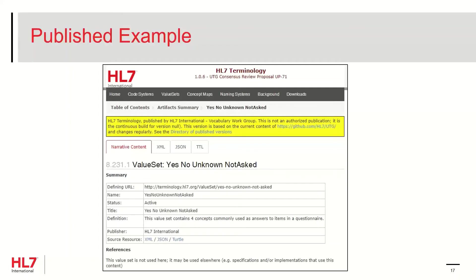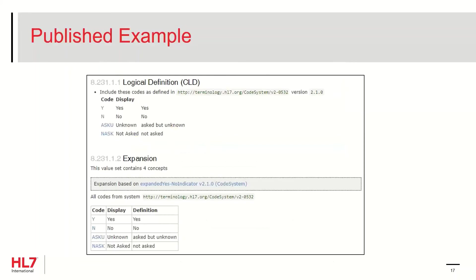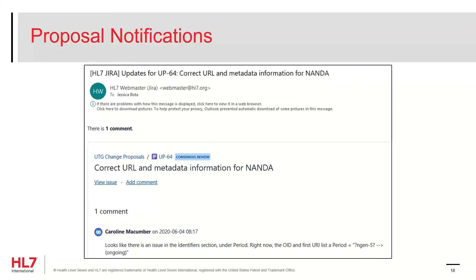The value set has been fully built by the IG publisher so that all parts of it, including the expansion, can be examined as part of the review. Throughout the consensus review process, you will receive emails to the account associated with your JIRA login about your proposal. Most of these emails will be triggered by comments being added. It's important to monitor these, as people may have questions or feedback and will not cast a vote until they hear from you.